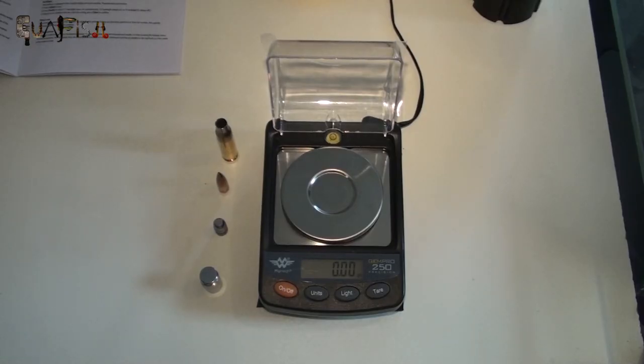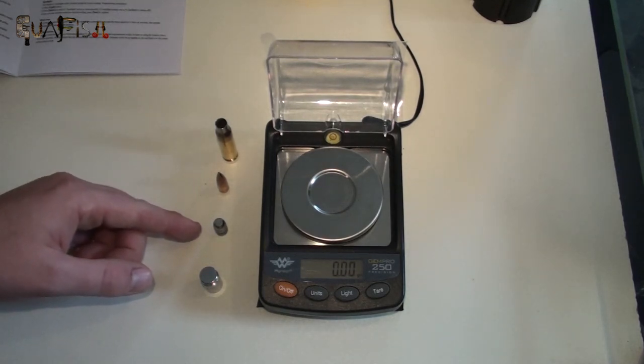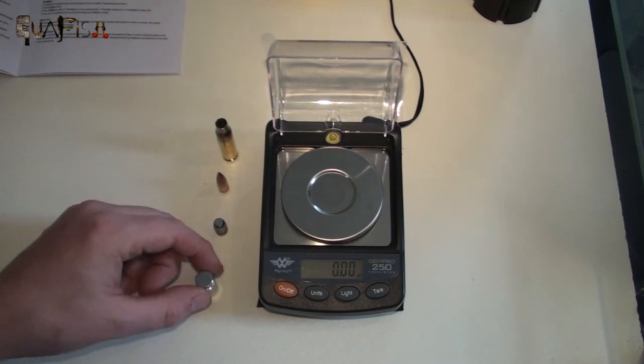The GEMPRO 250 scales, we're going to do some calibration testing with a 308 case, a hollow point boat tail bullet, a lead round nose flat point bullet, and a calibration weight.